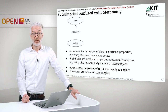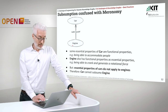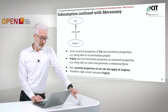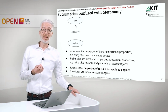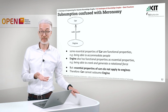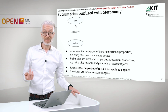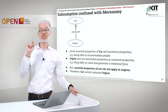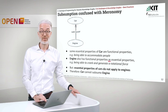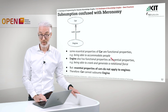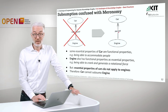Another source of confusion is also meronomy, or also called partonomy. For example: engine is a subclass of car — that doesn't sound right. Some essential properties of cars, such as being able to accommodate people, don't apply to engines. Engines have essential properties like being able to crank and generate a rotational force. Essential properties of cars do not apply to engines. Therefore, a car cannot subsume engine. The right description would be that engine is a part of the car.